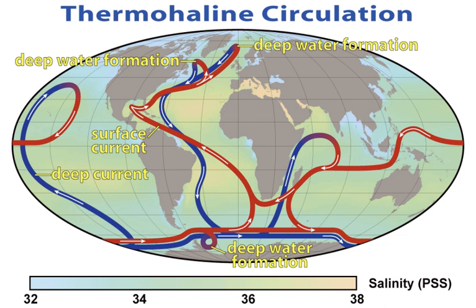Thermohaline circulation is a part of the large-scale ocean circulation that is driven by global density gradients created by surface heat and freshwater fluxes. The adjective thermohaline derives from thermo-, referring to temperature, and haline-, referring to salt content, factors which together determine the density of seawater.